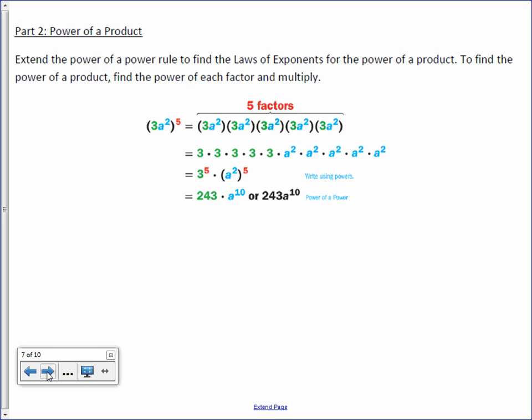Extend the power of a power rule to find the laws of exponents for the power of a product. So to find the power of a product, find the power of each factor and multiply. So in other words, we have 3a squared raised to the 5th power, which means we would write it 5 times.